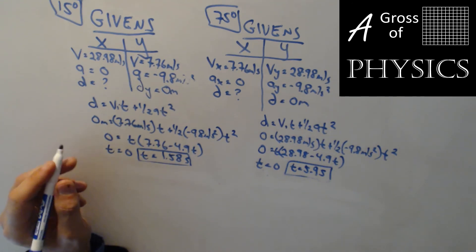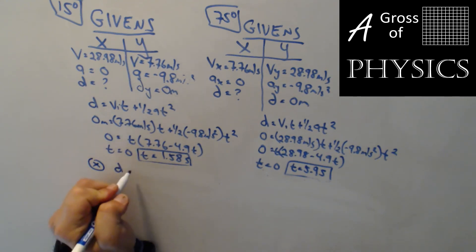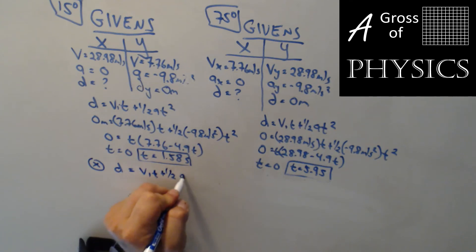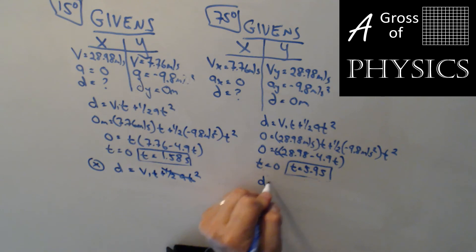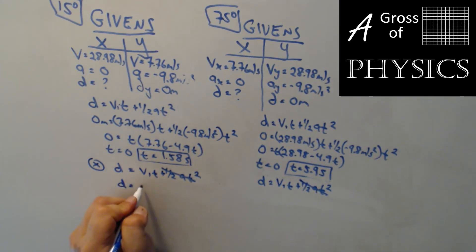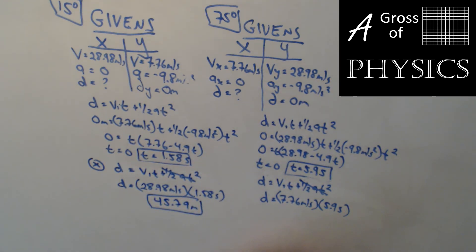All right. Now, after we solve for the time in the Y directions, we're going to go to the X direction to find the range. D equals V, I, T, plus one-half A, T squared. We're going to cancel out the A, T squared term, and we'll do the same thing on this side. D equals V, I, T, plus one-half A, T squared. Cancel out the A term. D equals, and the X velocity was 28.98 meters per second, times 1.58 seconds. And then for this one, D equals 7.76 meters per second, times 5.9 seconds. Let's see if we get the same range. 28.98 times 1.58 gets me 45.79 meters. And then 7.76 times 5.9 gets me 45.784. 45.784 meters.